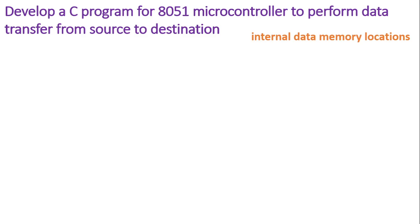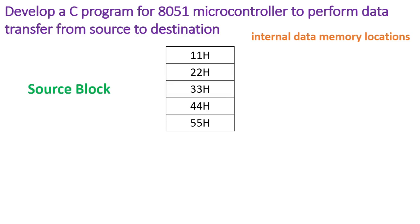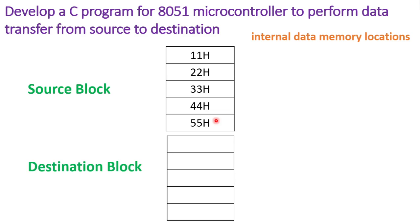It is assumed that the memory used is internal data memory — that is, internal RAM — used as source memory locations as well as destination memory locations. The source memory block contains 5 eight-bit numbers stored in 5 internal consecutive RAM locations. Those numbers are 11H, 22H, 33H, 44H, and 55H. The numbers can be any numbers.